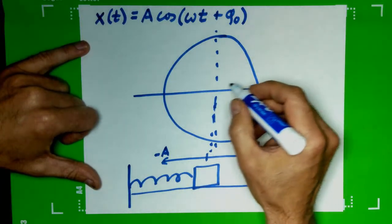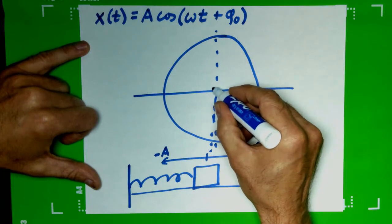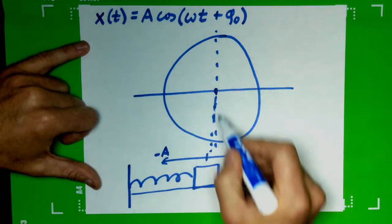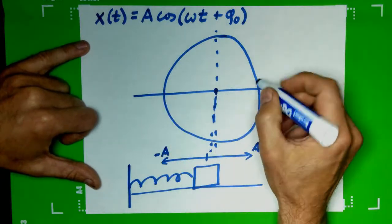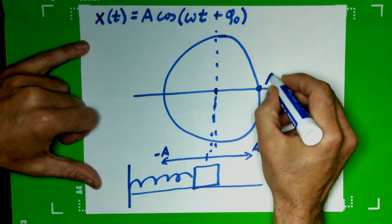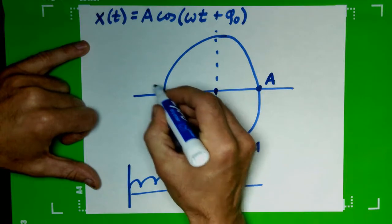So on this circle, we have our origin here, and we just translate this axis up to there. So this point right here becomes positive A, and this point right here becomes negative A.